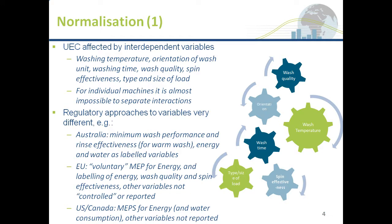This is further complicated by the regulatory approach taken in different countries. In some countries they fix those variables — you must have a certain wash quality and spin effectiveness; that's the case in Australia, where energy and water are labelled. In the EU there are voluntary MEPS for energy, and wash quality, energy, and spin are labelled, but other variables aren't reported to the consumer. In the US, while there are MEPS for energy and water consumption, other variables aren't communicated to the consumer. So in some countries performance variables are fixed, affecting all other variables; in other countries everything is open.